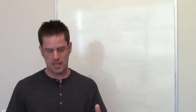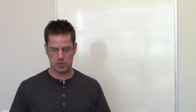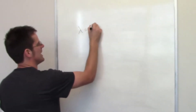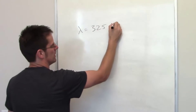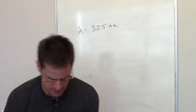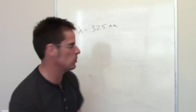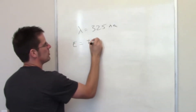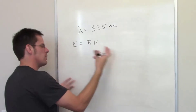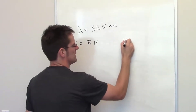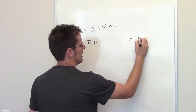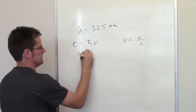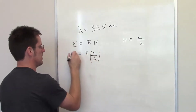In the second problem, we're told that one type of sunburn occurs through exposure to UV light of a wavelength of 325 nanometers. Part A asks: what is the energy of a photon of this wavelength? Once again, energy equals Planck's constant multiplied by frequency. Remember from our previous problem that frequency equals the speed of light divided by wavelength, so we can substitute that in.